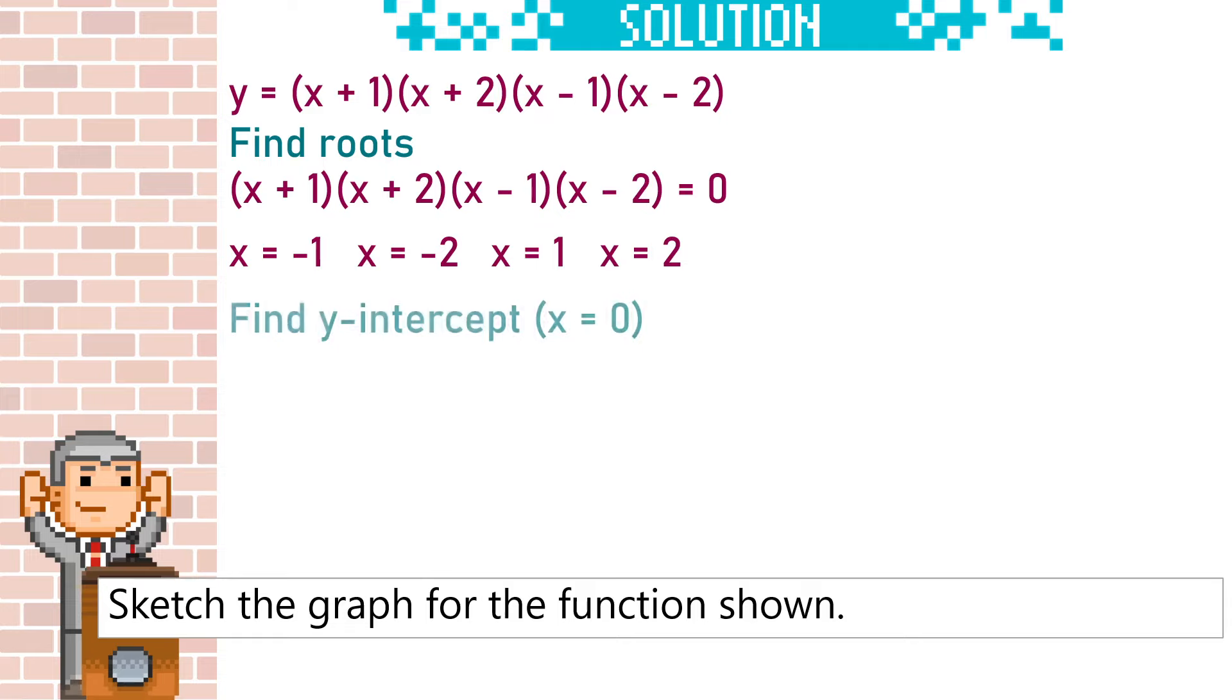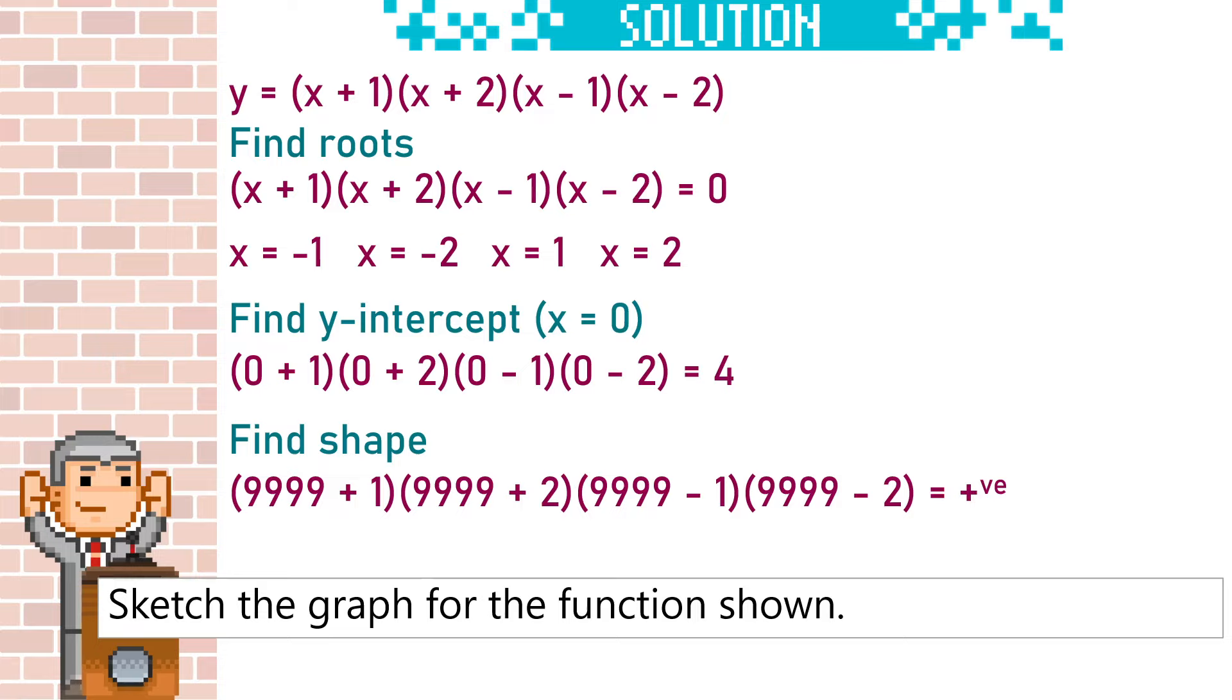Next to find the y-intercept, we substitute 0 as x, so our y-intercept for this question will be 4. There are a couple of ways to find the shape. You could expand the brackets and see the sign on the coefficient of x to the power of 4, or you can substitute a really large positive and really large negative number into the quartic and see the signs of the answers. A large positive number gives a positive answer for this, but a large negative number also gives a positive answer. Our quartic is therefore positive.